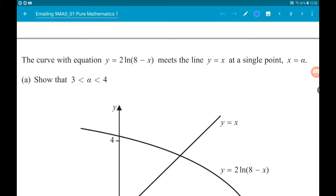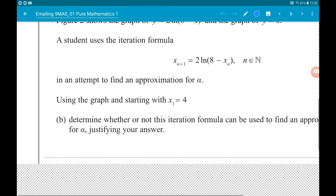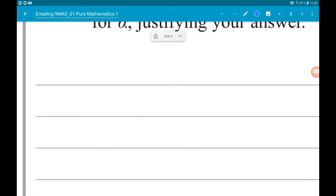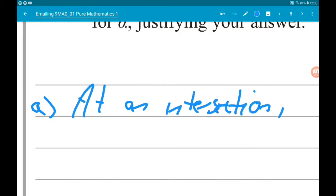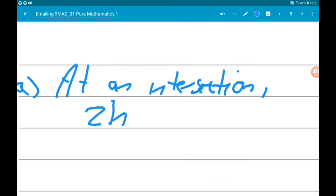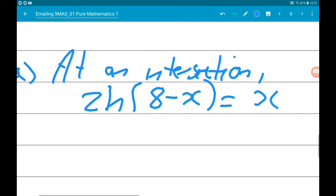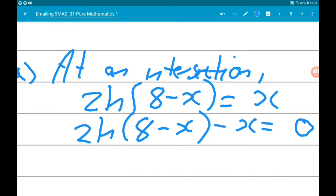So at a point where this curve meets the line they are equal to each other. So at an intersection, 2 log of 8 minus x is equal to x. Now if we subtract x from both sides, we would get that 2 log 8 minus x minus x is equal to zero.